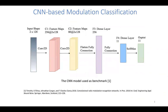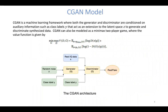We used the same model as the benchmark. We proposed a GAN architecture where the generator and discriminator are conditioned on class label Y. The discriminator determines if the given modulation is real or fake. After training, the generator uses the class label to generate a high-quality labeled dataset of various modulation types.